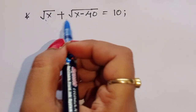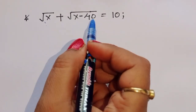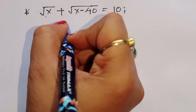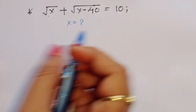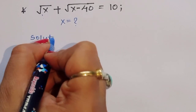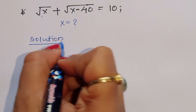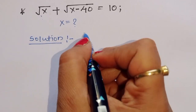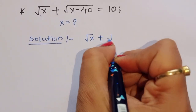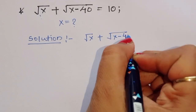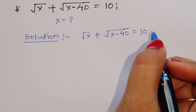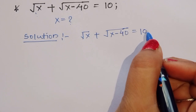Given: square root of x plus square root of x minus 40 is equal to 10. We have to find out the value of x. Let's see the solution.